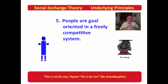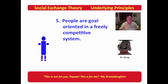People are goal-oriented in a freely competitive system. We're in a system in life where we compete with other humans — we're part of the herd. A herd of antelope might have to outrun other antelope to stay ahead of the leopard. We compete with others, and because we compete, we become very goal-oriented, very much focused on what we want out of life.